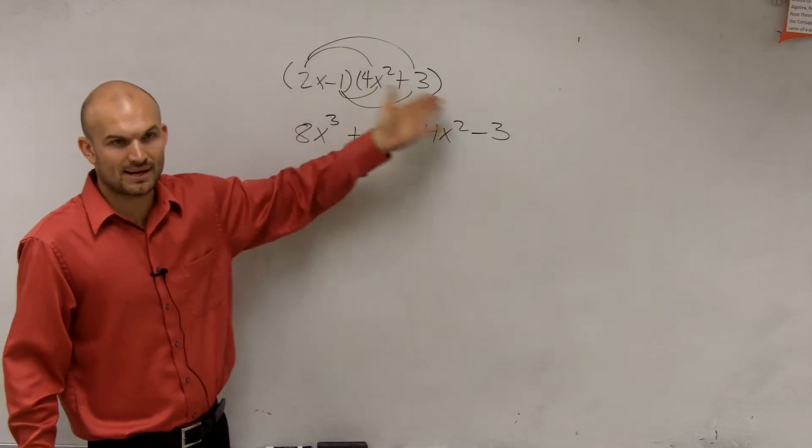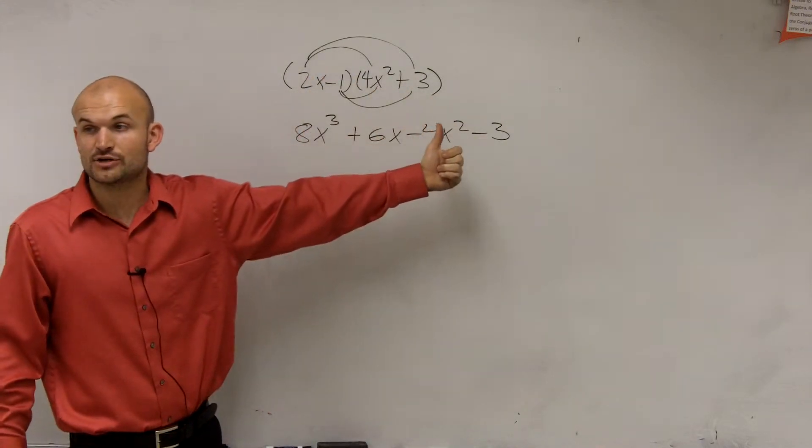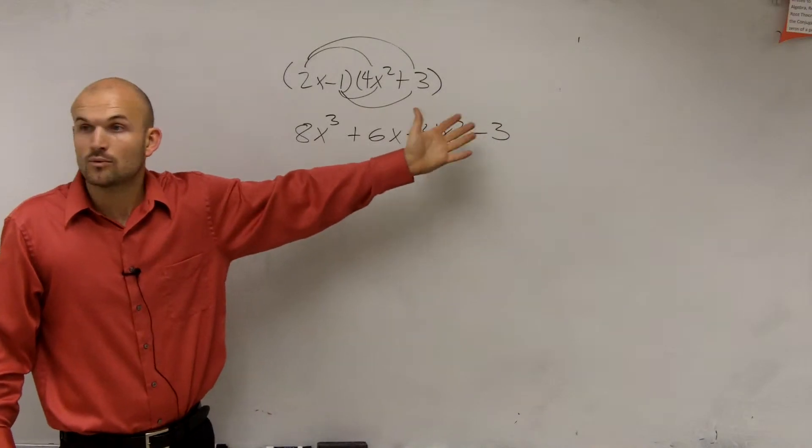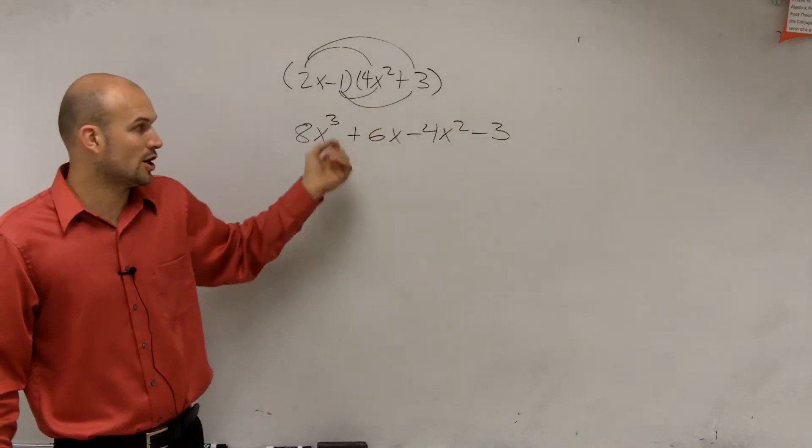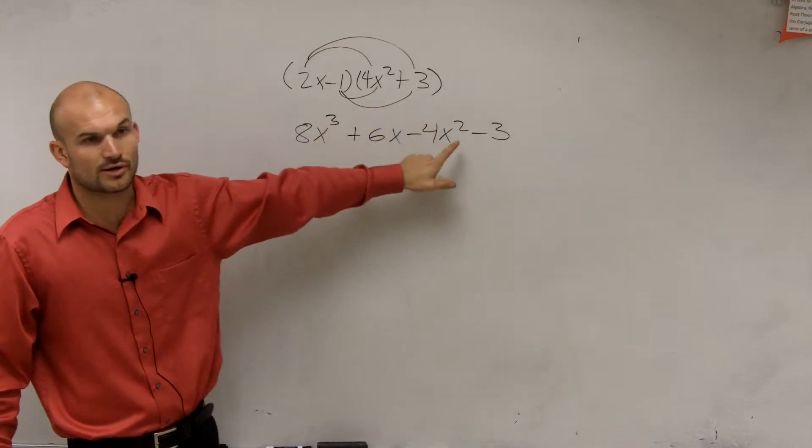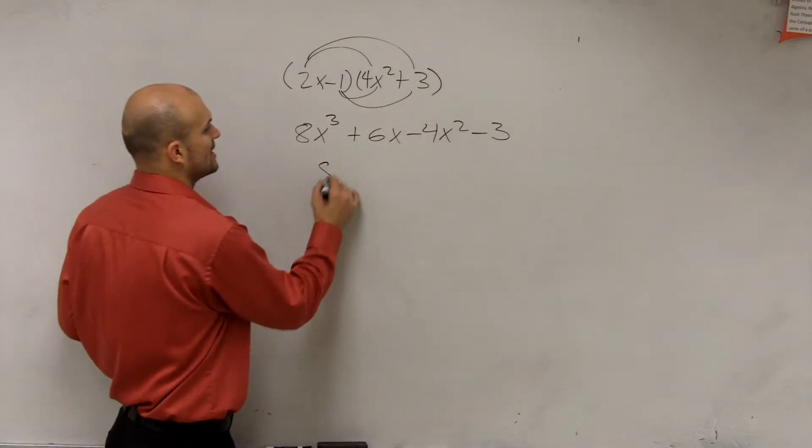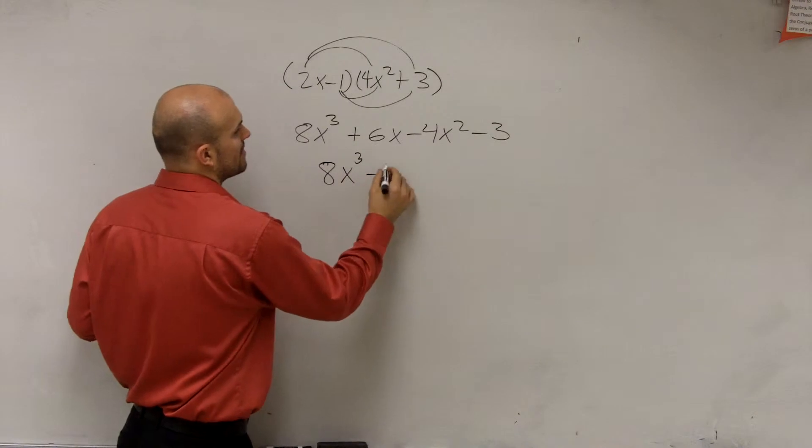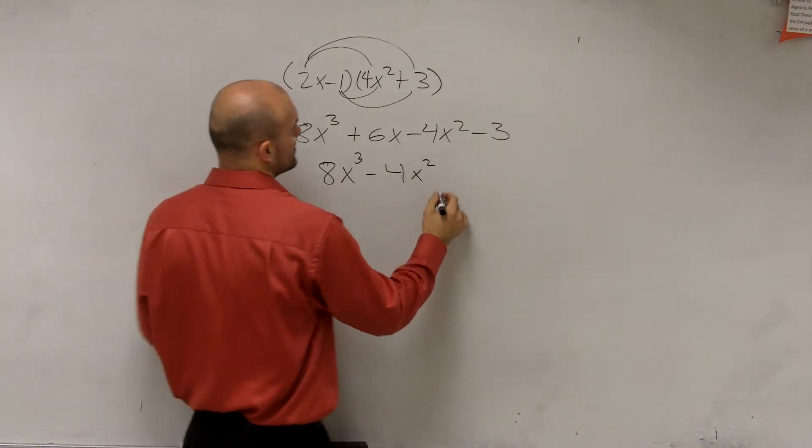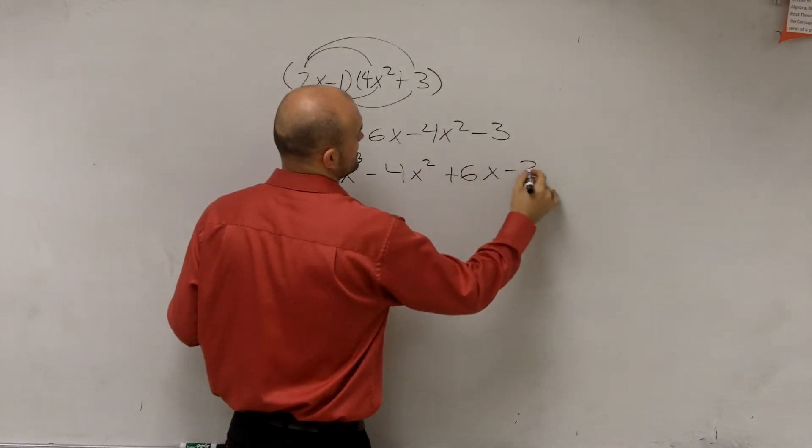Now, since I've multiplied all my terms, what I want to make sure I do is rewrite this in standard form with the monomial with the largest degree, meaning your largest exponent, listed first and then going down in descending order. So we write 8x cubed minus 4x squared plus 6x minus 3.